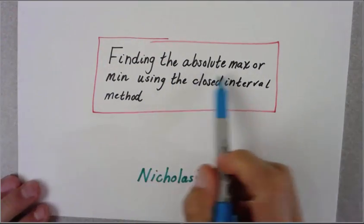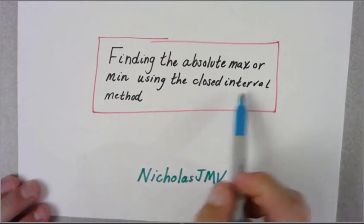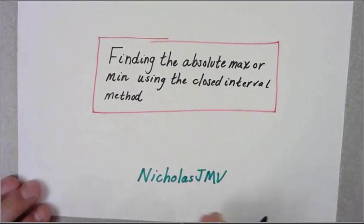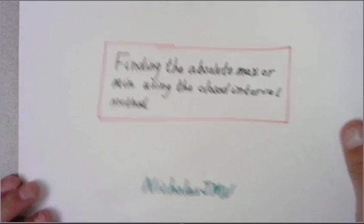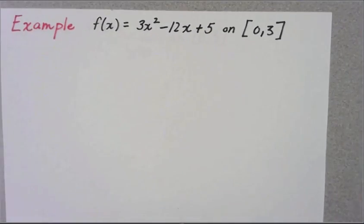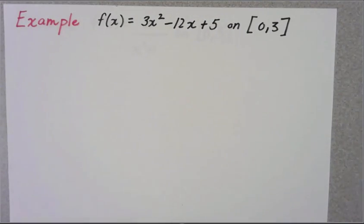Welcome to finding the absolute max or minimum using the closed interval method. This is Nicholas JMV. The two examples I have for you today are from Patrick JMT. We're going to get started with an example to figure out what it means by closed interval test, and it's really similar to when we find absolute maxes and mins with critical values.